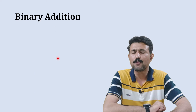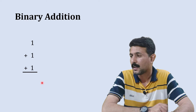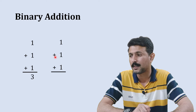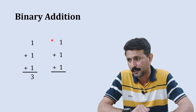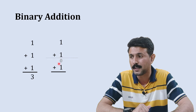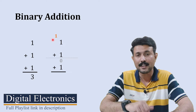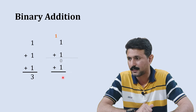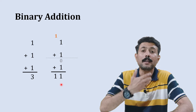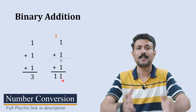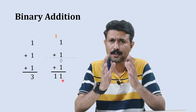For more clarity, consider 1 plus 1 plus 1 in decimal, which gives 3. In binary addition of 1 plus 1 plus 1, we first add the two 1s: sum is 0 and carry is 1. Then 0 plus 1 gives 1, and bringing the carry down gives 1 1 in binary, which is the decimal equivalent of 3.